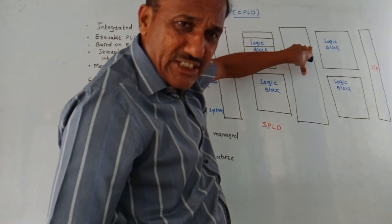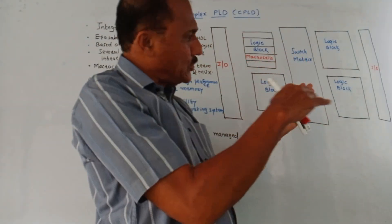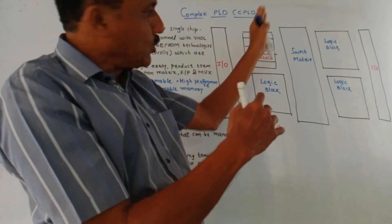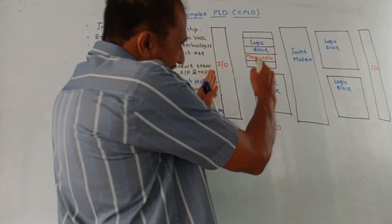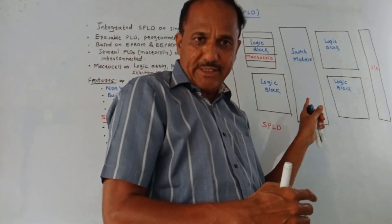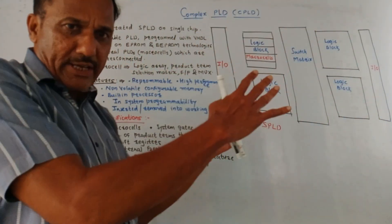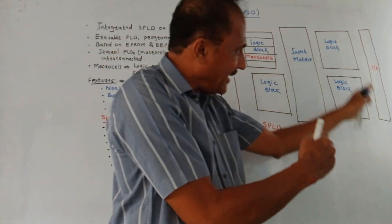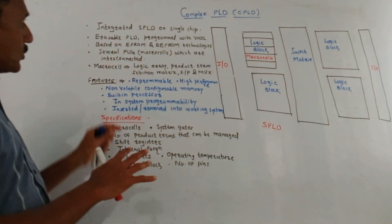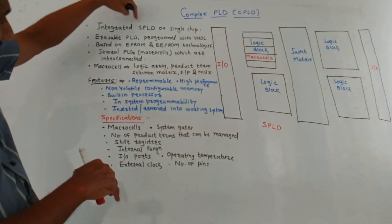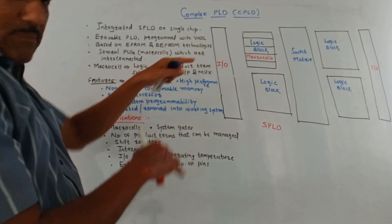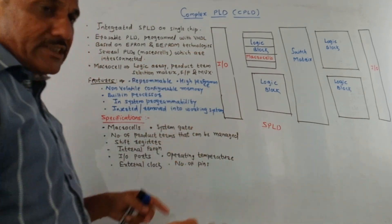All these functional blocks are interconnected with each other. This interconnection is not shown in this diagram just to avoid complexity. A switching matrix is used — as the name indicates, it performs switching actions from one functional block to another. At both ends, I have shown connections for input and output devices, so we can connect N number of inputs and N number of outputs to this CPLD. It is basically integrated SPLD, that is Simple Programmable Logic Devices, on a single chip.